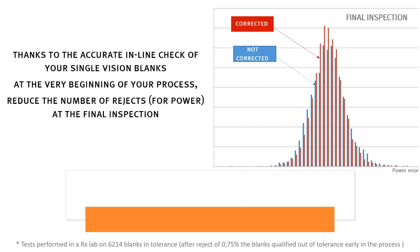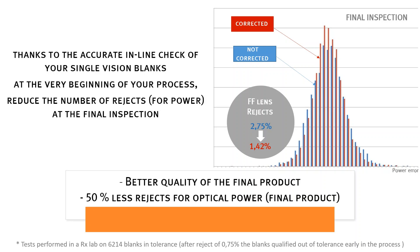Simply, the lab is producing more lenses within tolerance. Analysis of this data shows that when applying the ISO standard, the lab's baseline of rejects for power is around 3%. However, by adding compensation, the reject rate is reduced to 1.5%, which is a 50% reduction.